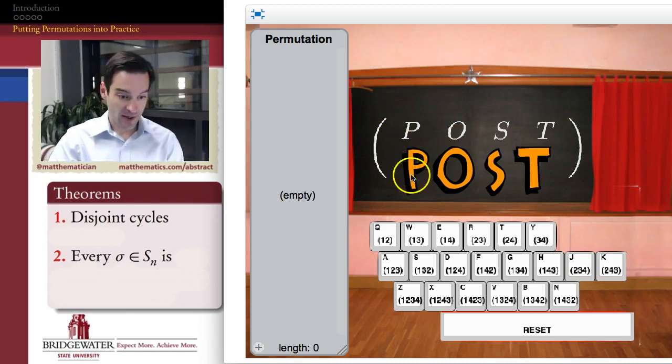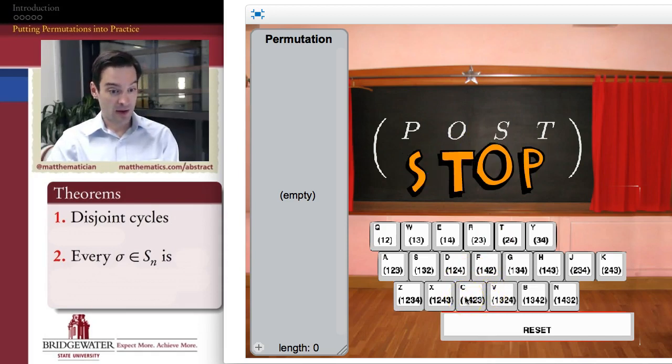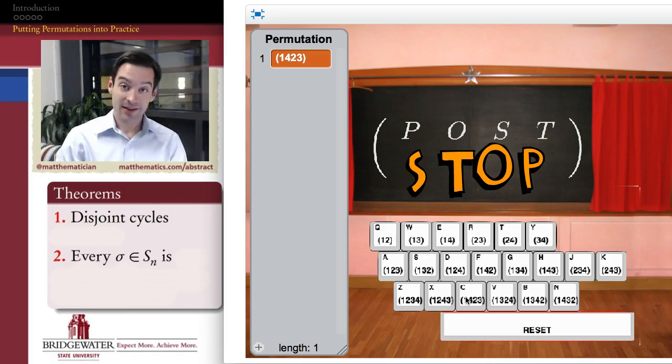And then just for completeness, let's also try a 4 cycle. Maybe the 4th cycle 1, 4, 2, 3, maybe this one right here. So the first symbol goes to position 4, the fourth goes to position 2, the second goes to position 3, and then the third wraps back around to position 1. I do that, and what I get happens to be the word STOP. So the question in the previous video is what permutation turns POST into STOP? And in cycle notation, we would say that the permutation that does that has the cycle notation 1, 4, 2, 3. It's a 4 cycle.